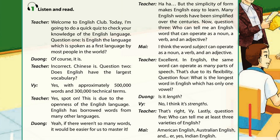Question 1: Is English the language which is spoken by most people in the world? Of course it is. Incorrect. Chinese is the language which is spoken by most people in the world.